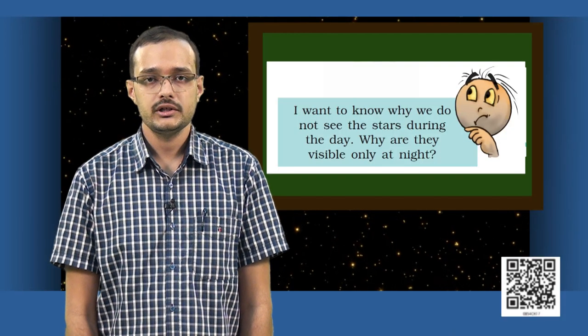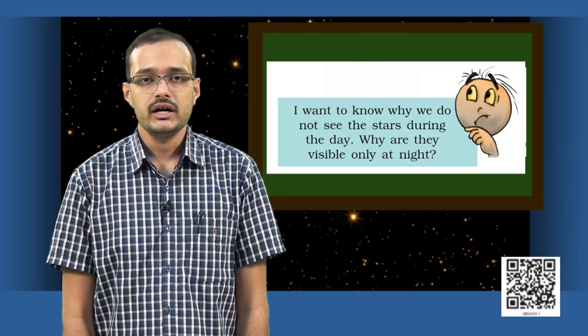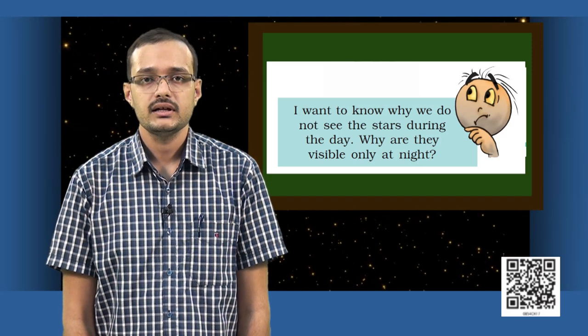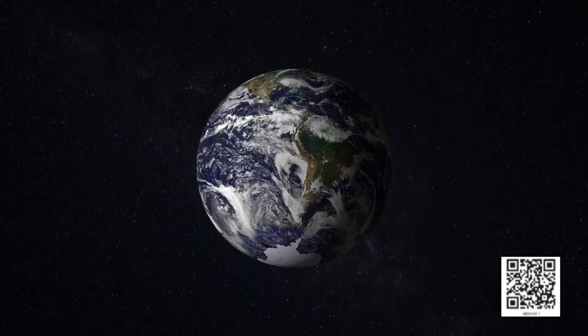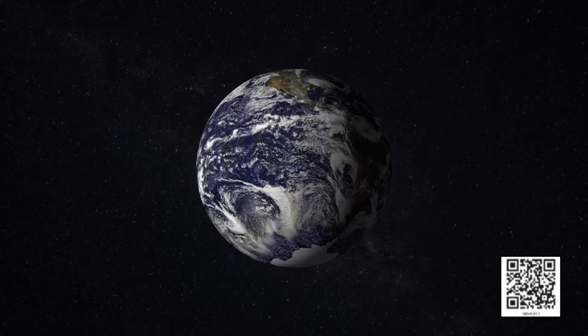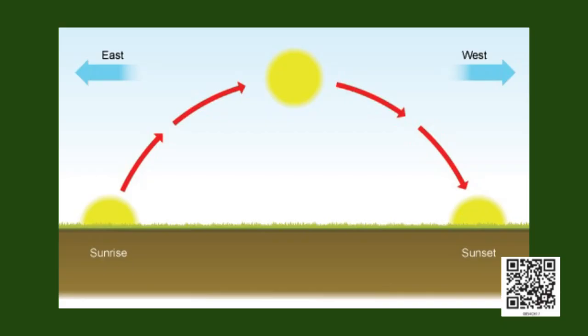Now, here is a point to ponder. Why do we not see the stars during the daytime? Take a minute and think about it. Now, you all know that earth rotates from west to east, which means all the stars appear to move from east to west just like the sun. Does this apply to moon as well?